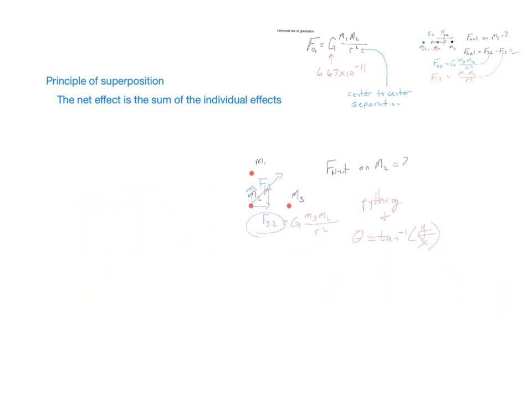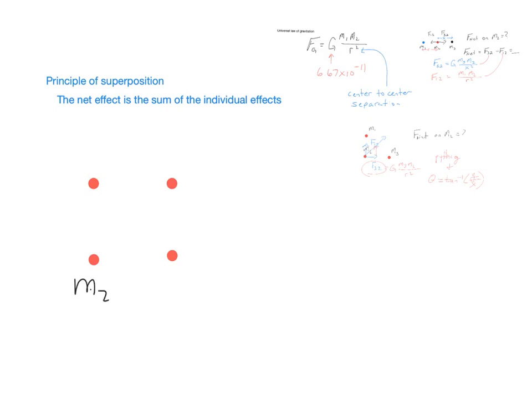The only way to make that more difficult is to add more particles. More particles mean more forces. So, if this was mass 2, and the same question, what's the force on mass 2? Mass 1 is still exerting the force up, mass 4 is exerting the force this way, mass 3 is exerting the force that way.